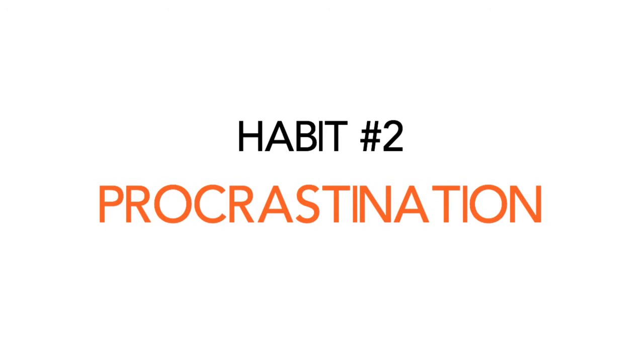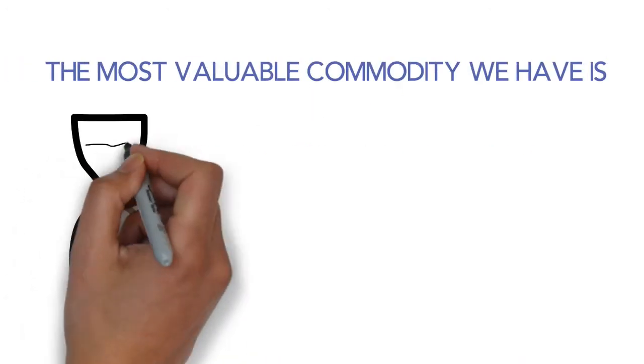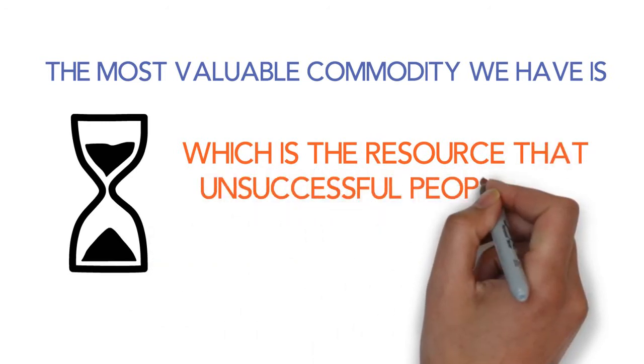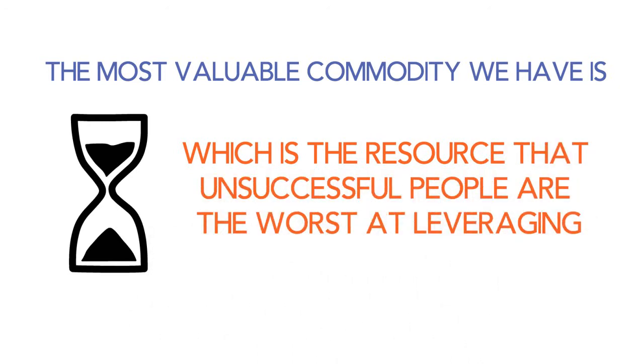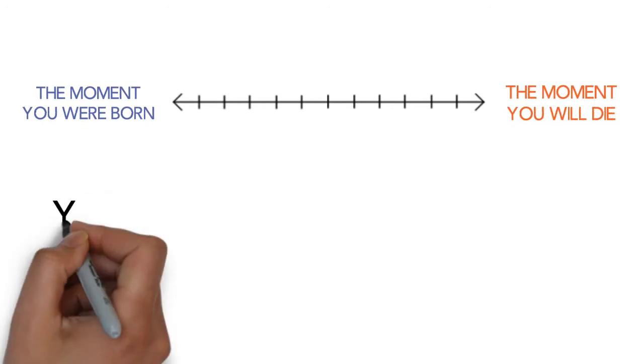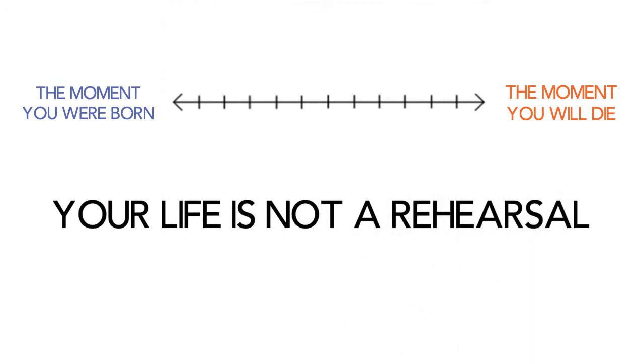The second bad habit you need to give up is procrastination. The most valuable commodity we have in life is time. And yet it is the one resource that unsuccessful people use the worst. The moment you were born, your life clock started to tick and you began to die. But somehow people tend to forget that one day our time will end and we are not coming back. Your life is not a rehearsal.